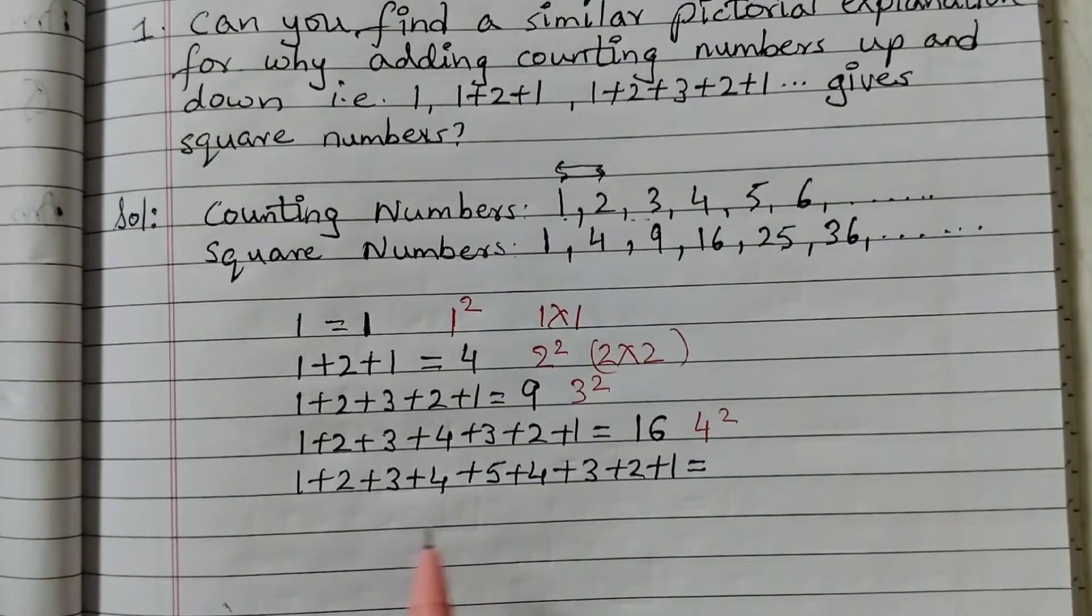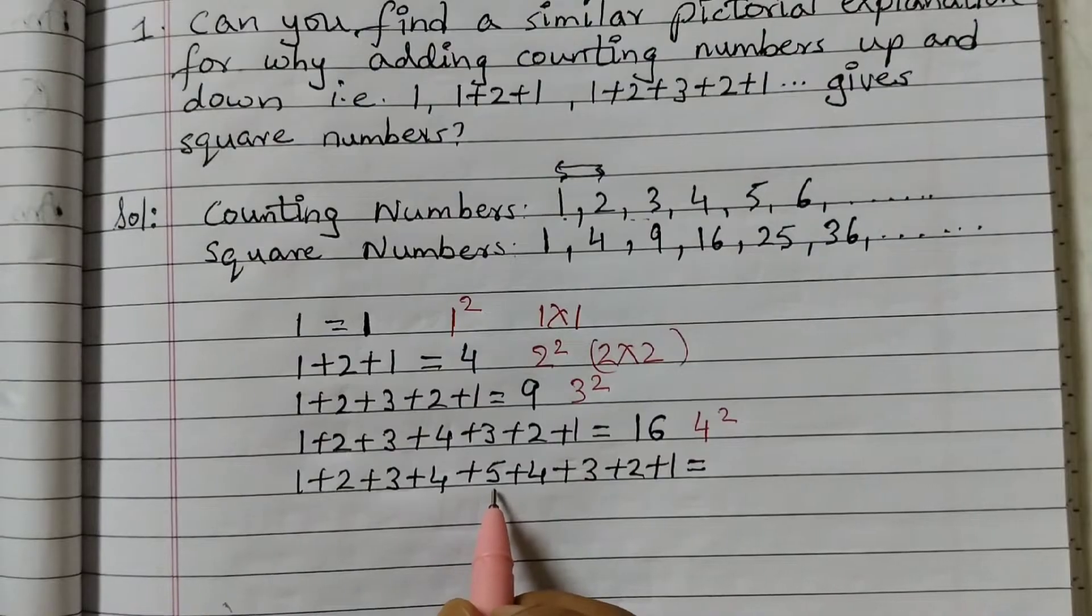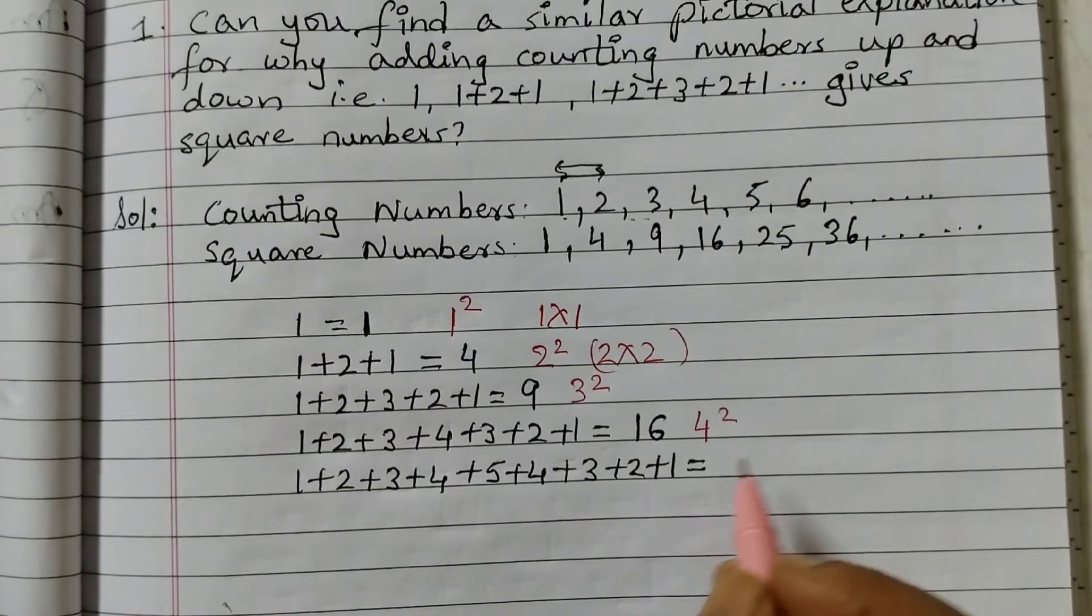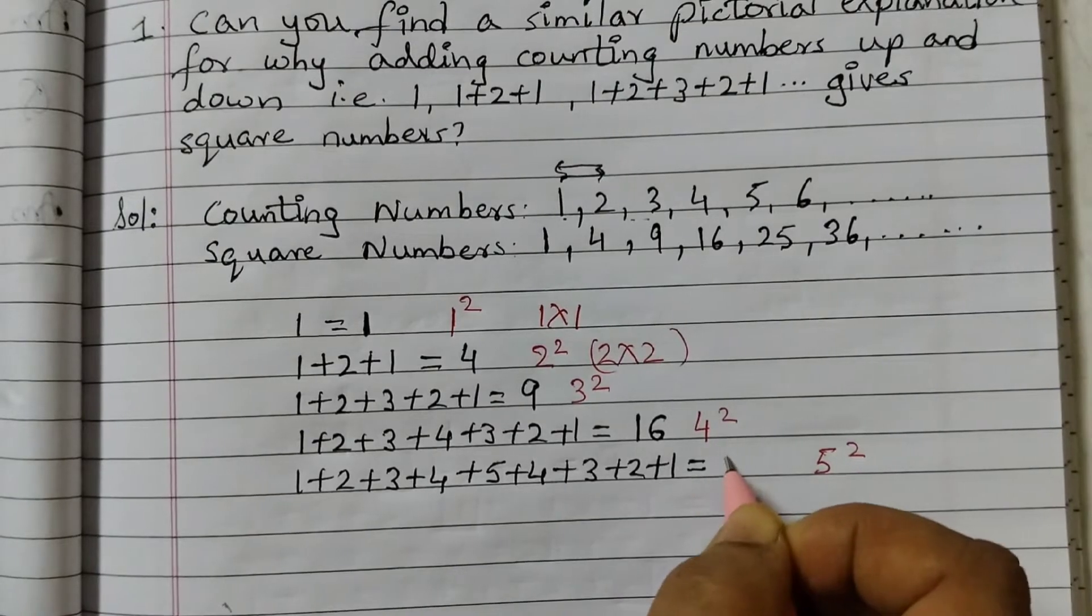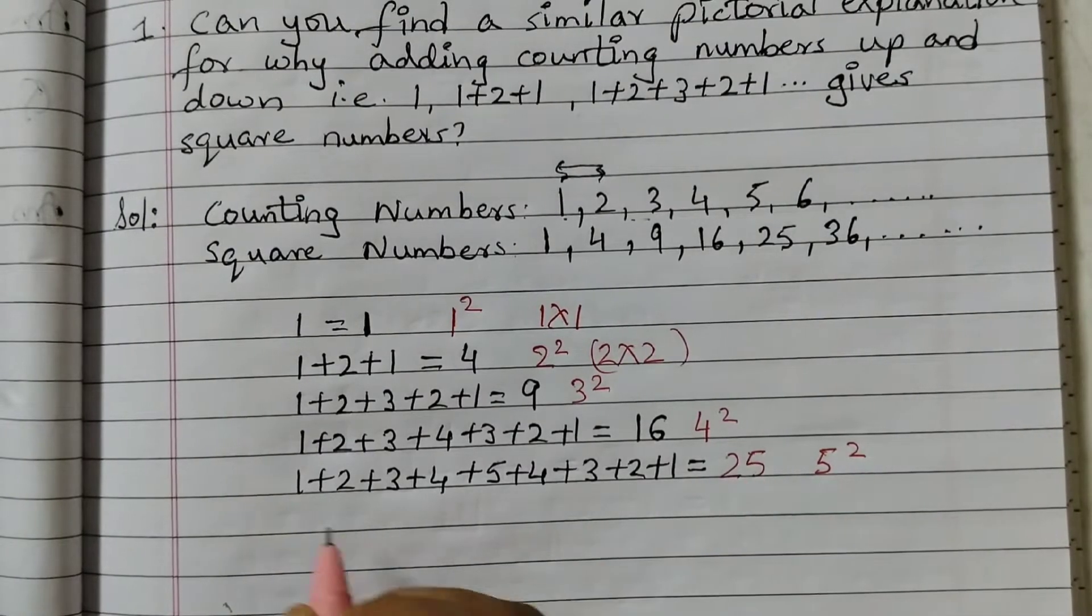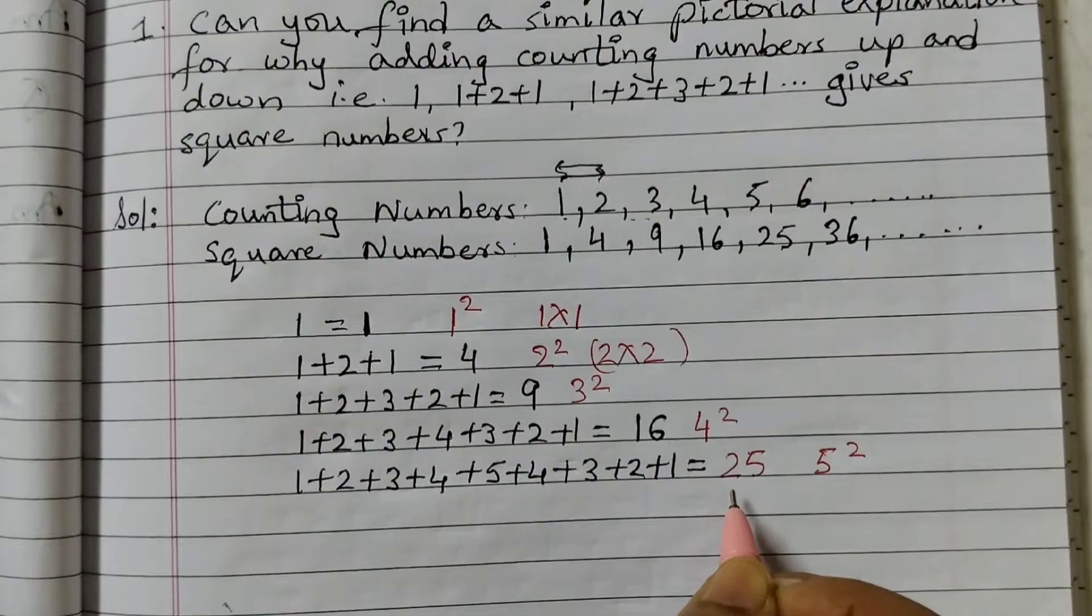So the 5th one here will be, we are going till 5 and then coming back to 1. So this will be 5 squared. So answer would be 25. You can add up and check if you are getting 25.